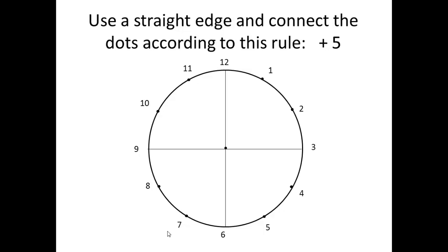Now use a straight edge and connect the dots according to this rule, plus 5. Let's start at the 1 o'clock dot. For example, 1 plus 5 equals 6. That means you're going to connect dot 1 to dot 6 using your straight edge and make a nice clean line. Again, be really gentle and light with the pencil. Dot 2 plus 5 equals 7, so connect dot 2 to dot 7. 3 plus 5 equals 8, so connect dot 3 to dot 8. Keep going until you get to 8.